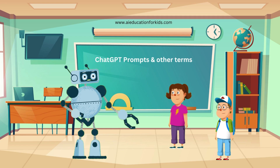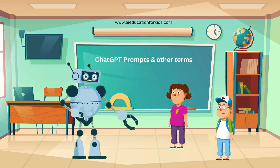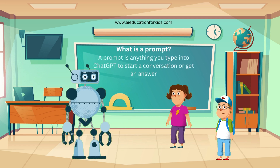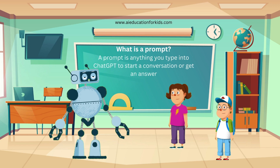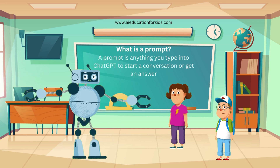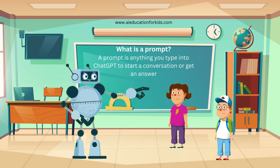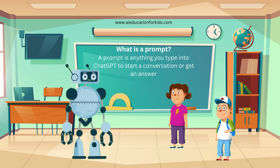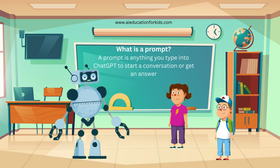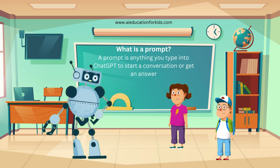Before we continue further, let's talk about some important terms you need to know to use ChadGPT effectively. First up is Prompt. A prompt is anything you type into ChadGPT to start a conversation or get an answer. It can be a question, a statement, or even a command. For example, when we typed 'what is a black hole?' — that was a prompt. So a prompt is like a question we asked ChadGPT? Exactly. It's the input you give to ChadGPT to get a response. The better your prompt, the better the response you'll get.